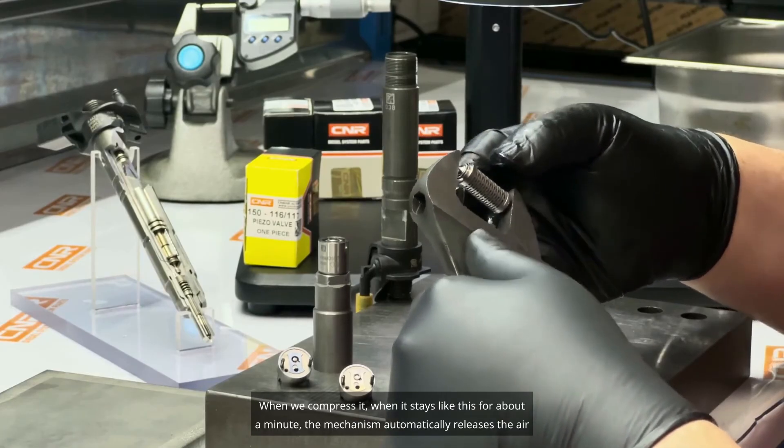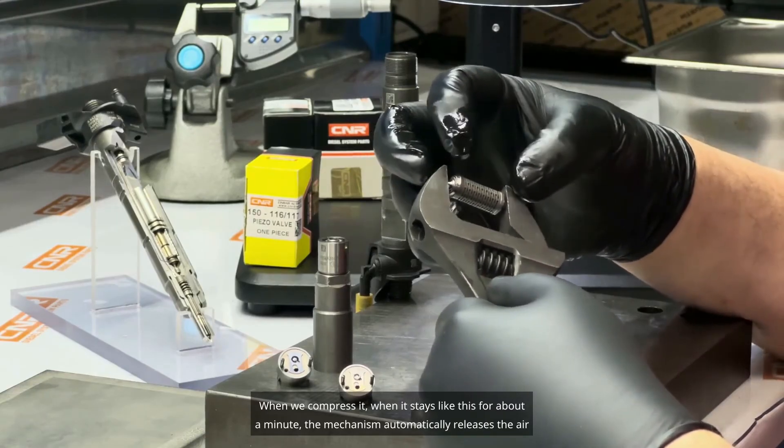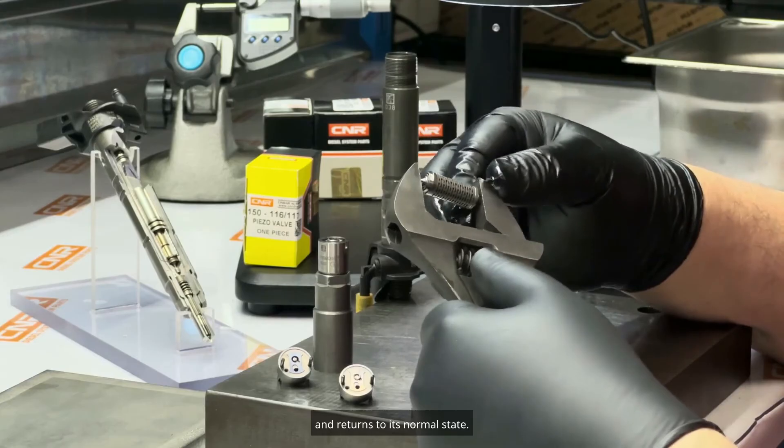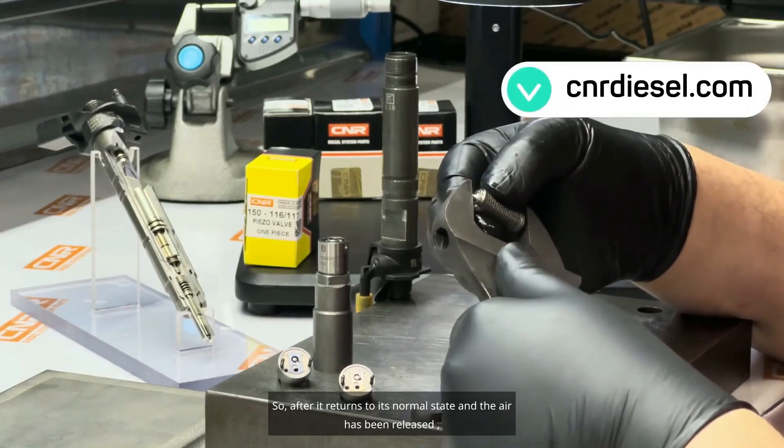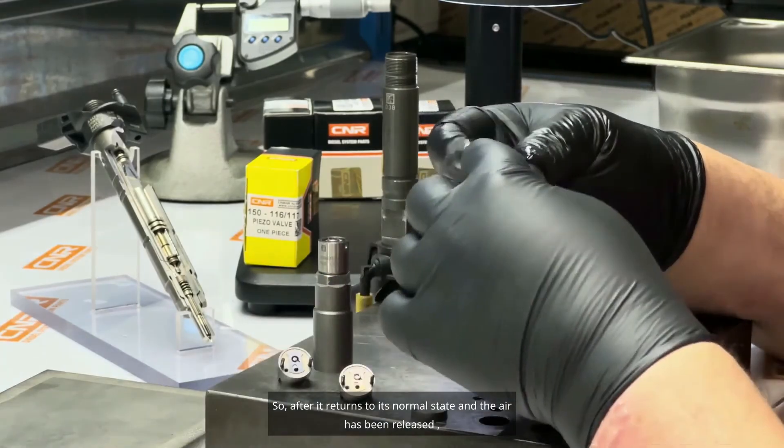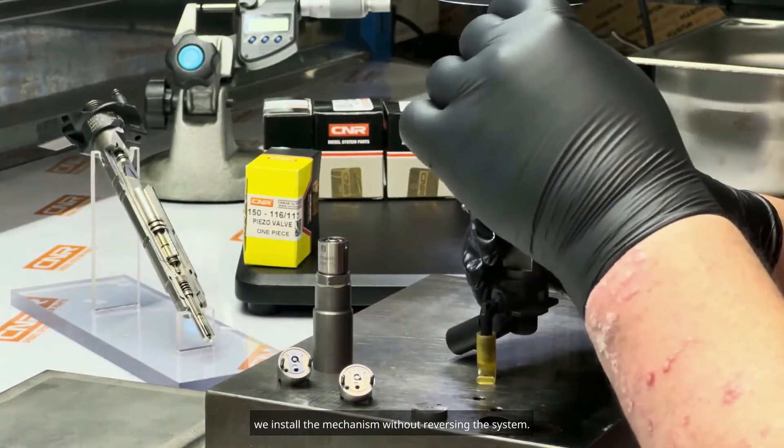When we compress it, when it stays like this for about a minute, the mechanism automatically releases the air inside and returns to its normal state. So, after it returns to its normal state, and the air has been released, we install the mechanism without reversing the system.